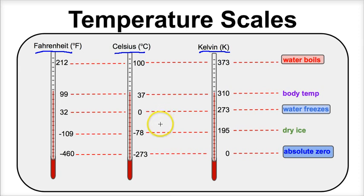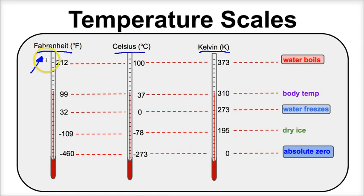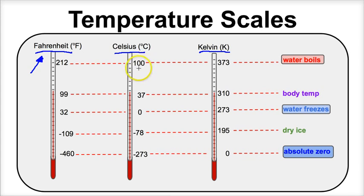If we take a look at the different scales, the one that we use in the United States of America is referred to as the Fahrenheit scale. For example, if we said that it was 100 degrees outside, we're referring to 100 degrees Fahrenheit, which is a hot day outside. But if you were to tell somebody outside the United States that it was 100 degrees, they're going to look at you like you're crazy — because they are on the Celsius scale. The rest of the world is primarily using the Celsius scale.